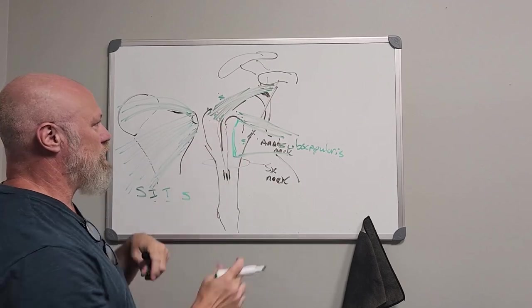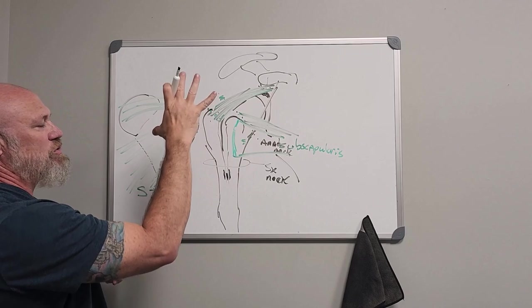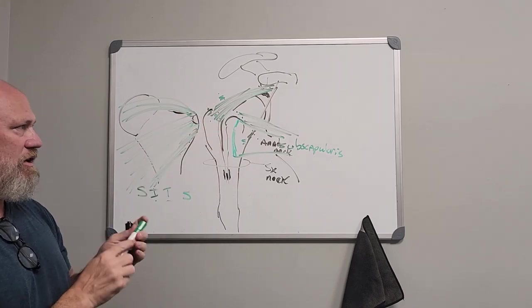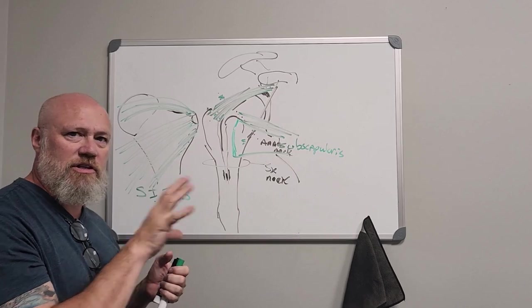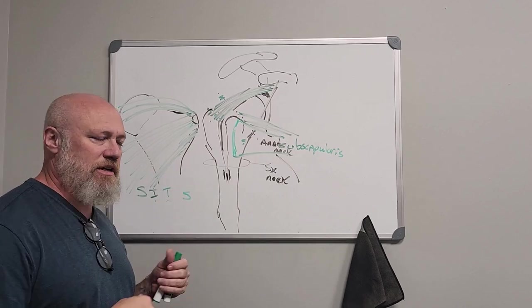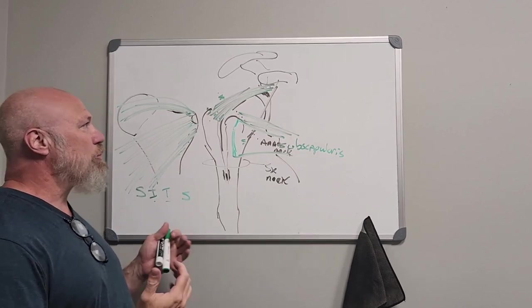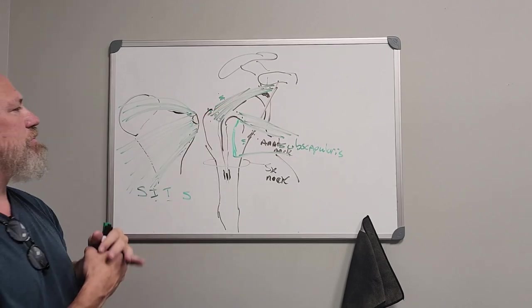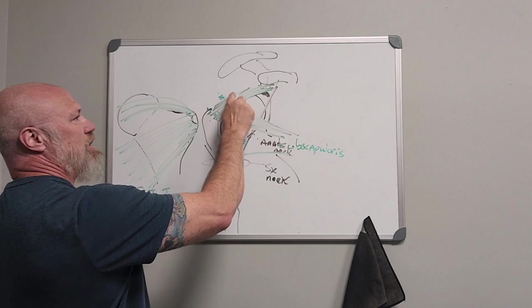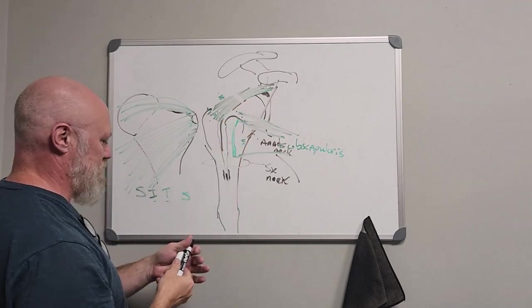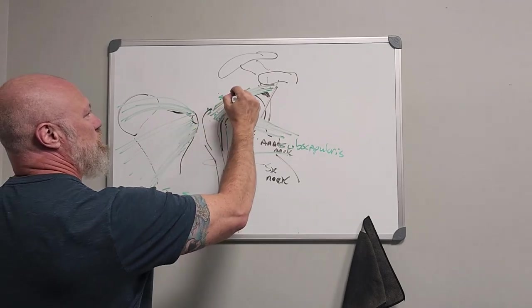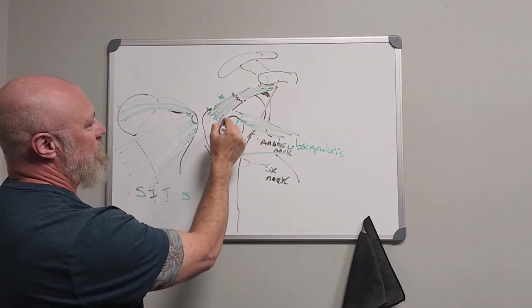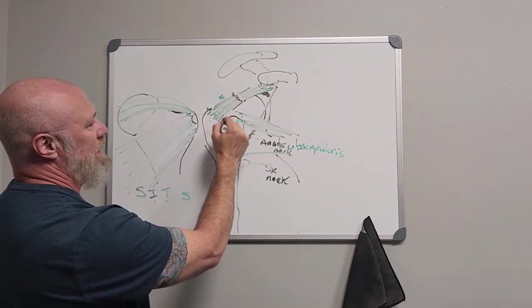So you can see how they really wrap around, and that subscapularis is pretty wide where it inserts into the lesser tubercle. So those four muscles are the rotator cuff and they're going to hold the head of the humerus in the glenoid. They're going to do a lot of internal and external rotations, and they are prone to injury quite a bit. You can get a superior lateral tear from anterior to posterior, SLAP lesion up here. The supraspinatus is very common to injure or tear.